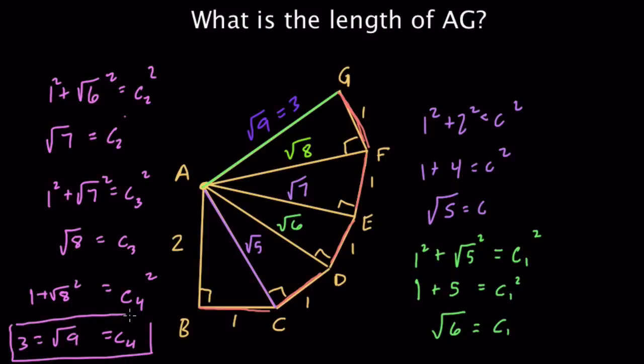So in this wheel, right, AG equals 3. All right, hope you like that. Thanks.